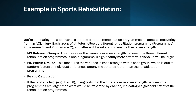Then we have the F-ratio calculation. If the F-ratio is high — for example, 5.8 — it suggests that the differences in knee strength between the programmes are larger than what would be expected by chance, indicating a significant effect of the rehabilitation programmes.